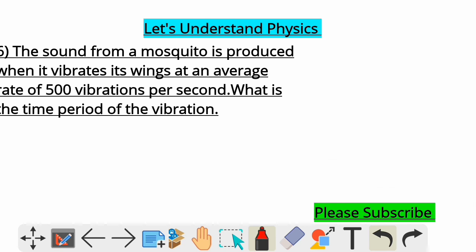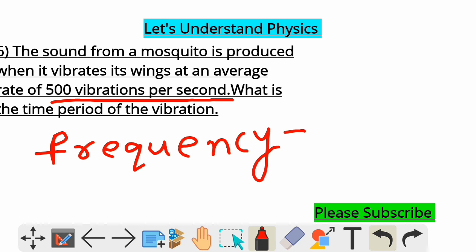You see the sound from a mosquito is produced when it vibrates its wings at an average rate of 500 vibrations per second. So, from the definition, number of vibrations per second is frequency. To see the problem, it is very lengthy. But only one data is given. Frequency is equal to 500 Hertz.